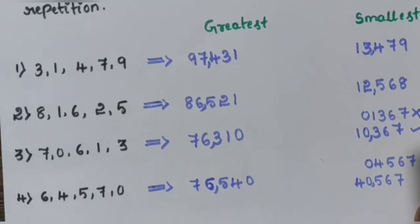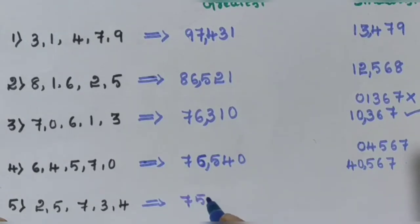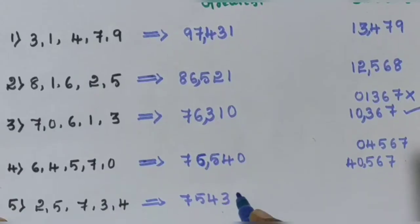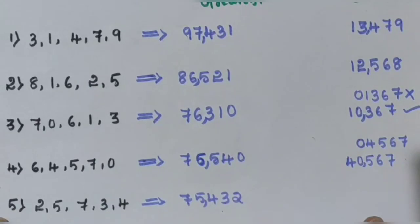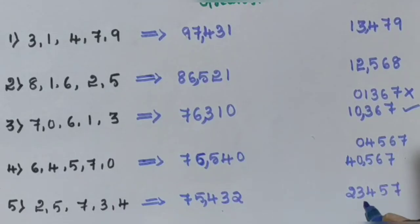Question number 5 — digits are 2, 5, 7, 3, 4. The greatest number arranged in descending order is 7, 5, 4, 3, 2 — so 75,432 is the greatest number. The smallest number arranged in ascending order is 2, 3, 4, 5, 7 — so 23,457 is the smallest number. Thank you.